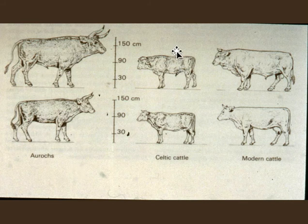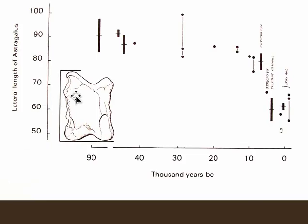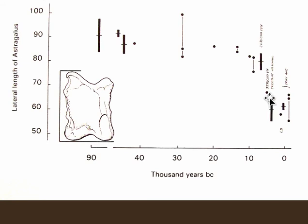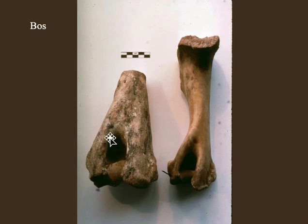Here is wild cattle in Europe called the aurochs, and here are the first domesticated cattle in Europe — you can see a dramatic size reduction. If you look at one kind of bone from the Middle East over thousands of years, the measurement stays roughly the same until around 8,000 years ago — around 8,000 BC — when you see a dramatic decrease in the size of that bone, showing that this is the period when we have domesticated animals.